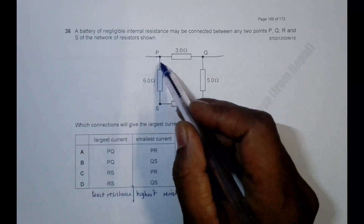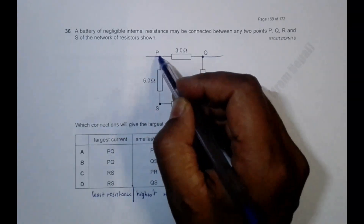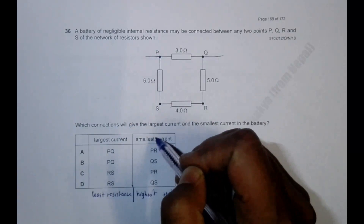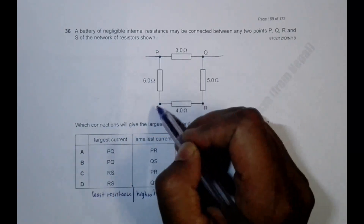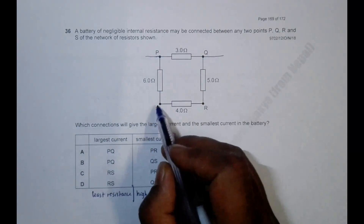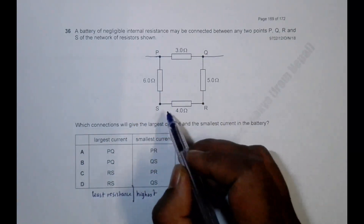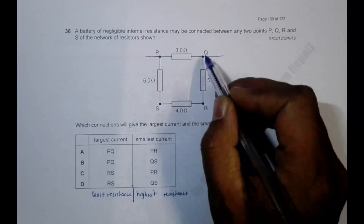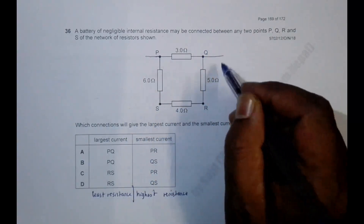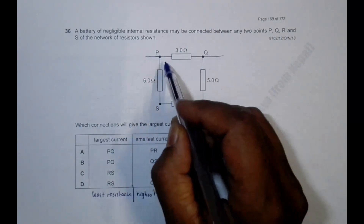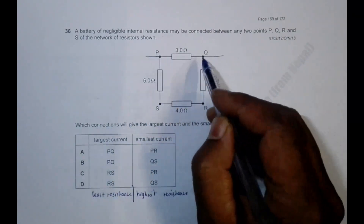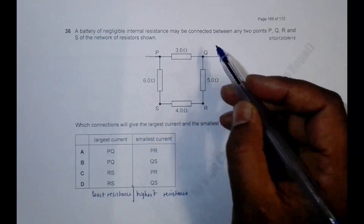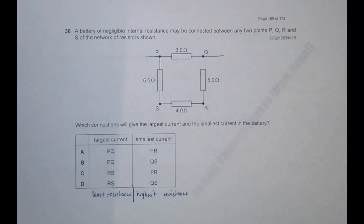If I connect here and here, it will be a parallel combination giving less than 6 ohm. If I connect across these two points, it will be less than 4 ohm. If I connect here and here, it will be less than 5 ohm. But if I connect across PQ, we have one resistor directly, and in parallel with others, giving less than 3 ohm — the smallest possible. So connecting across PQ gives the least resistance, meaning the largest current.